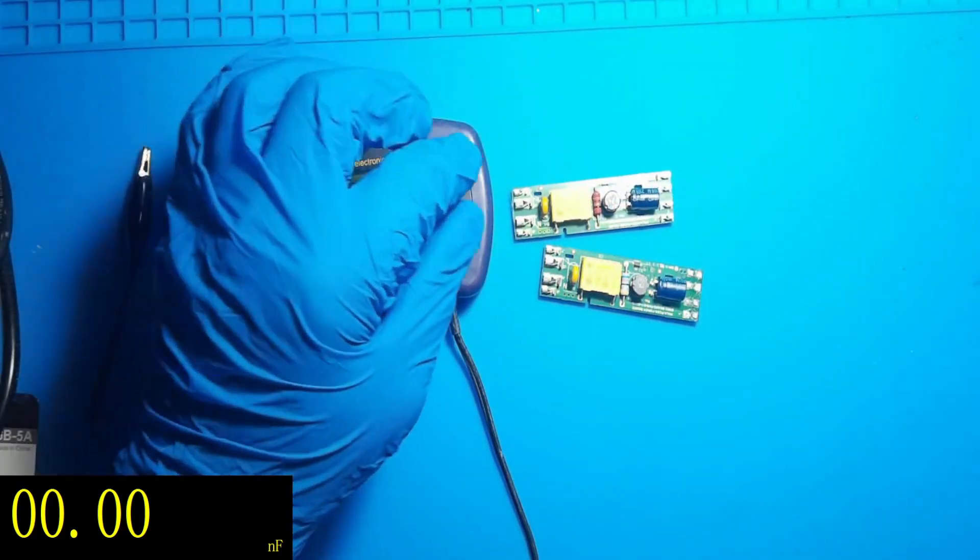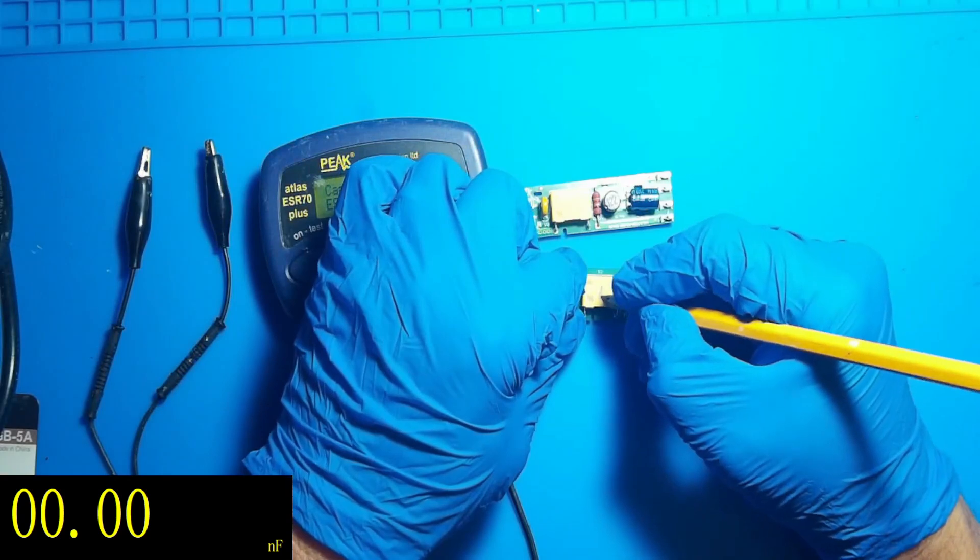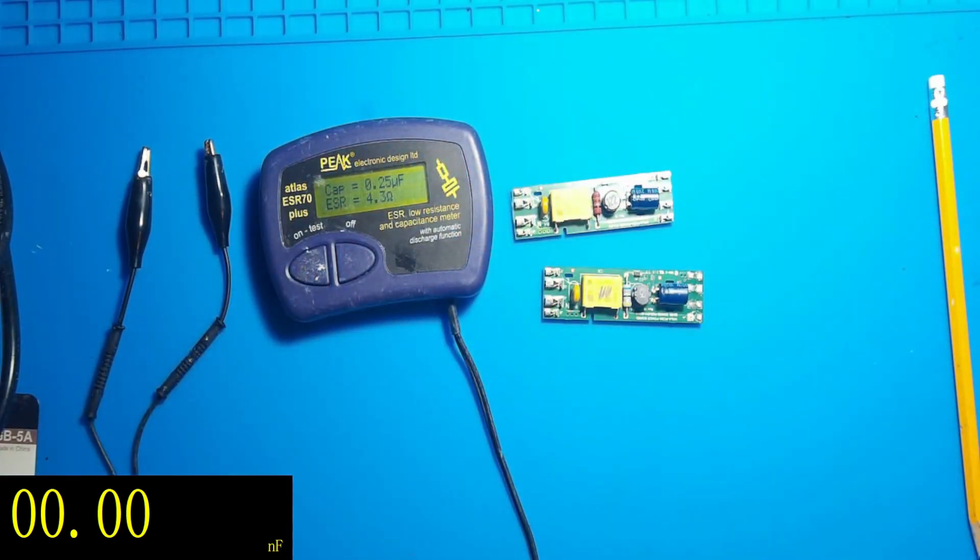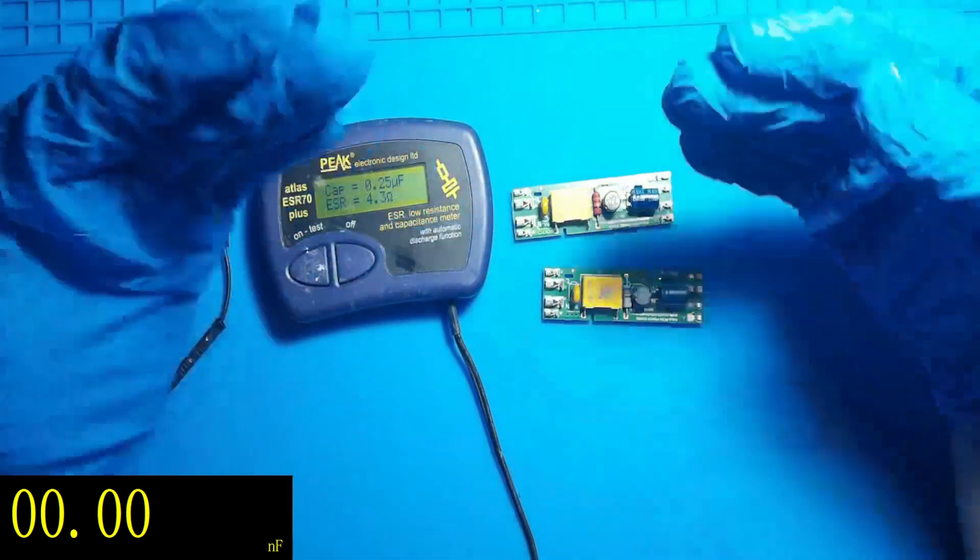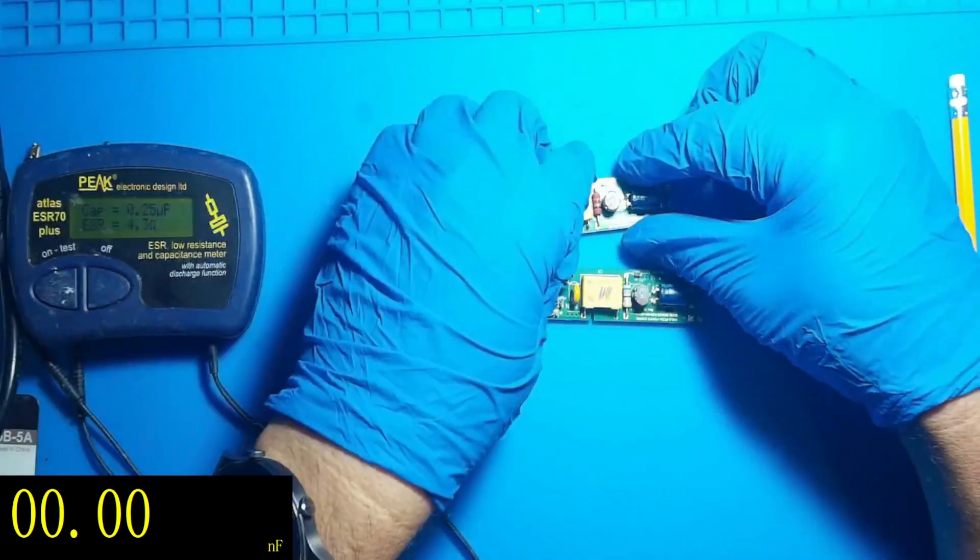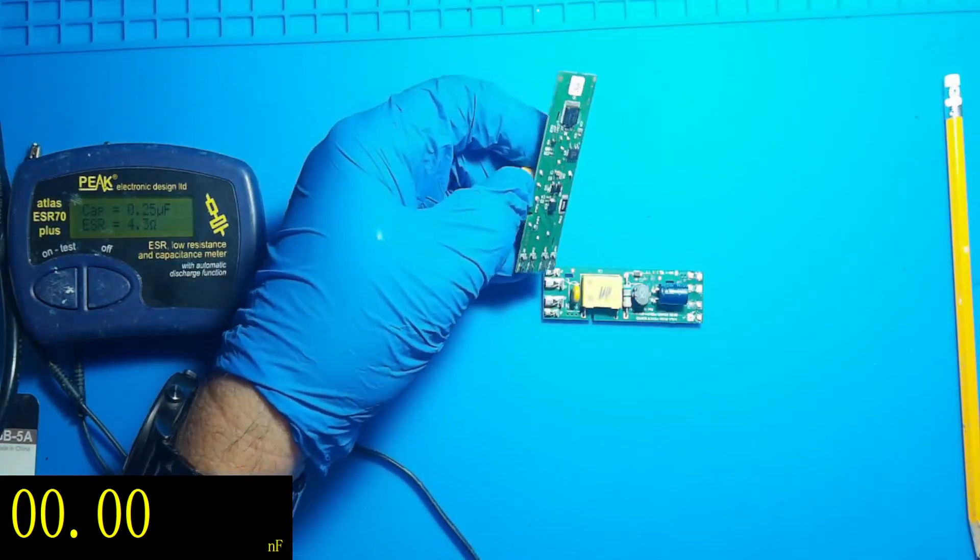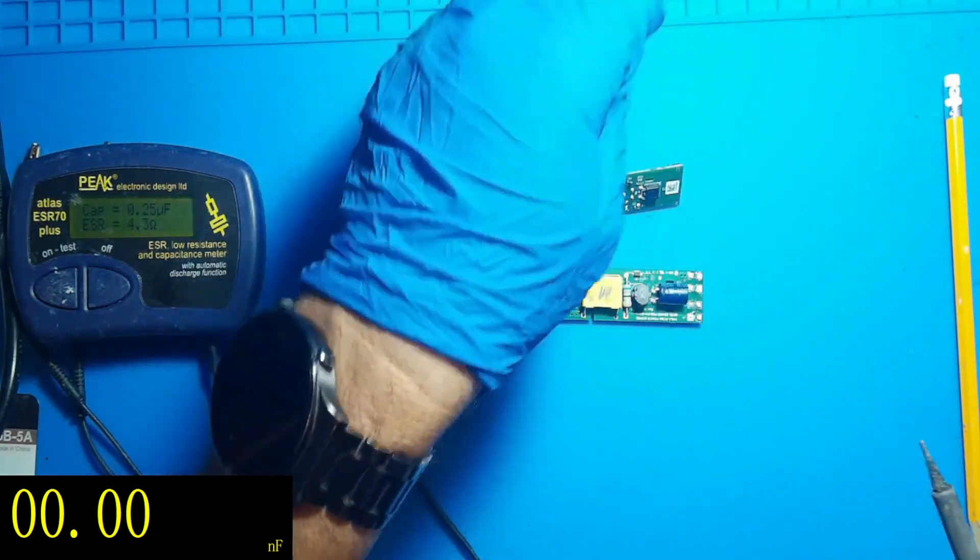Beauty of an ESR meter is 80% of the time you can measure while it's in circuit, you don't have to take things out. So this is the bad one, right. What we're going to do, let's take these capacitors out and then do the readings all over again.